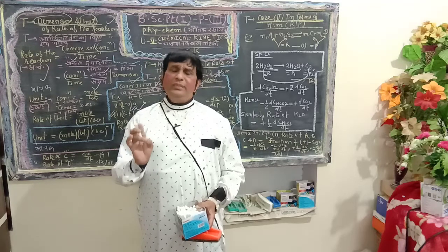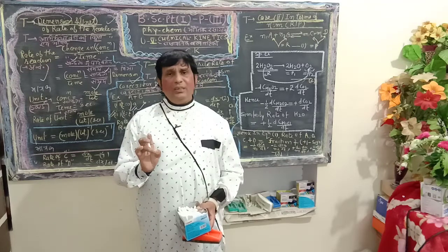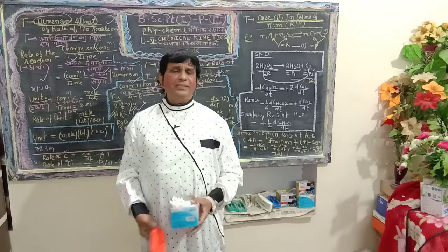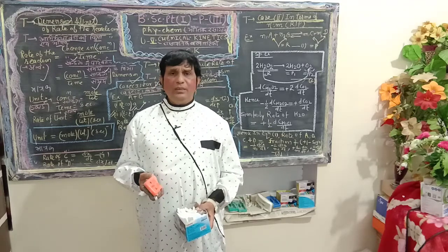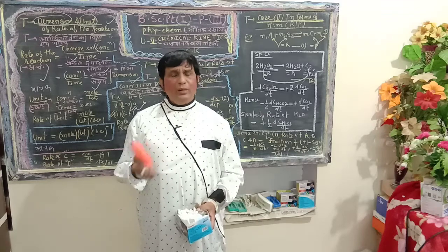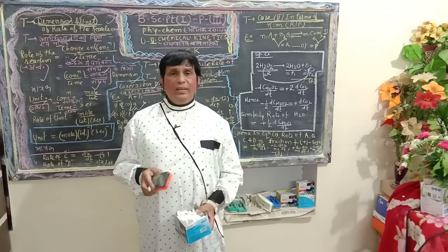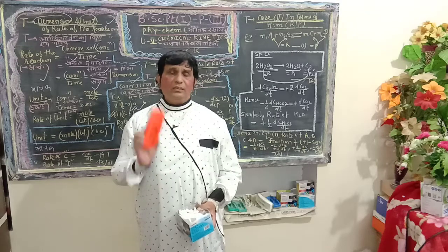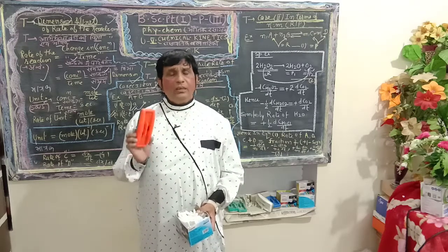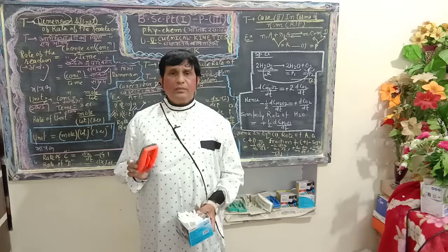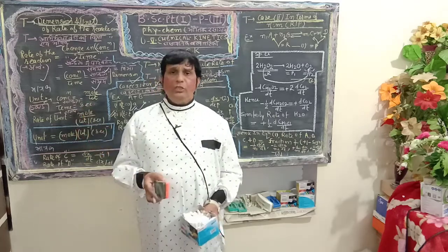Distance and displacement denote dimension, and one can represent them with units such as centimeter, millimeter, meter, kilometer, etc. Similarly, mass is defined as a dimension, while gram and kilogram are its units.